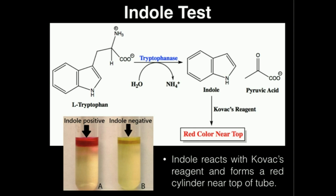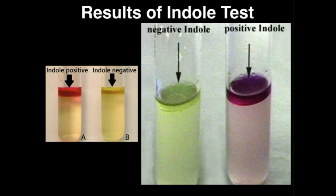Let's take another look at the results of the Indole test. As long as we produce indole, it will react with Kovacs reagent and we'll see a red color. Sometimes it can be a little darker, but it should be pretty obvious when you have a reaction with Kovacs reagent — it will definitely not be yellowish green or yellow. So this would be a positive indole result, meaning the bacteria express tryptophanase, while a negative result means the bacteria do not express tryptophanase.